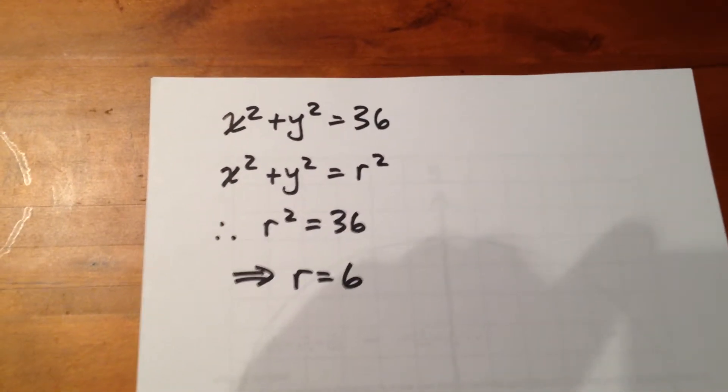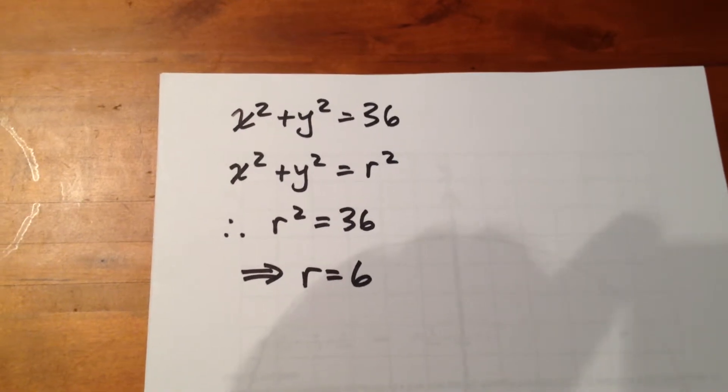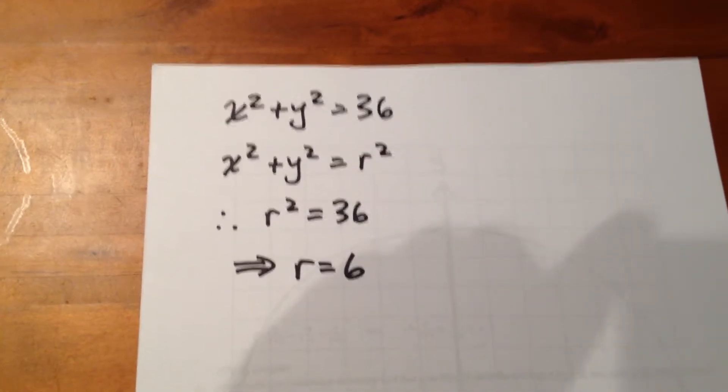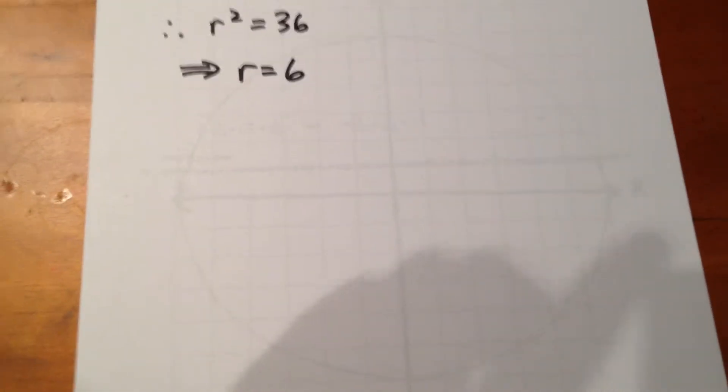Since 36 equals r squared, then r must be 6. So what we're talking about here is a circle of radius 6 centered at the origin.